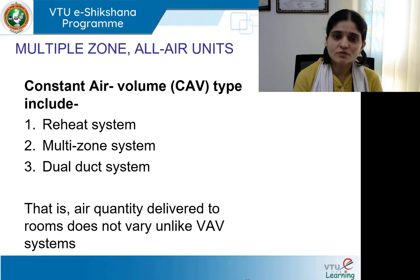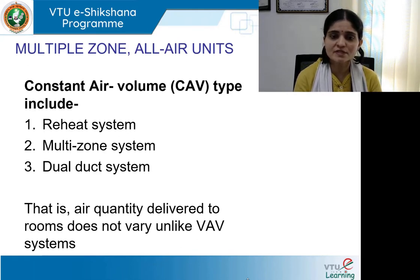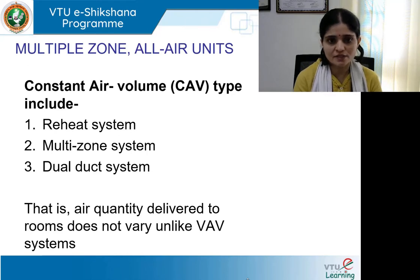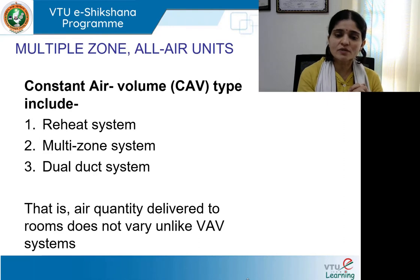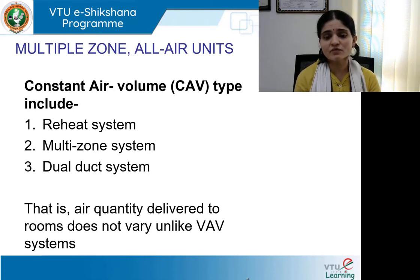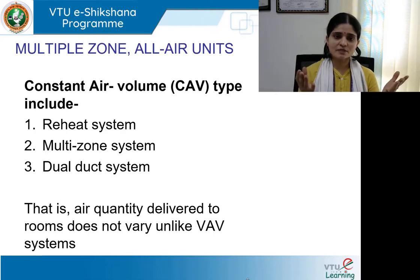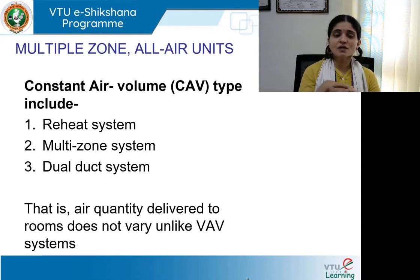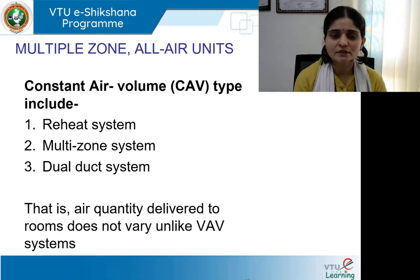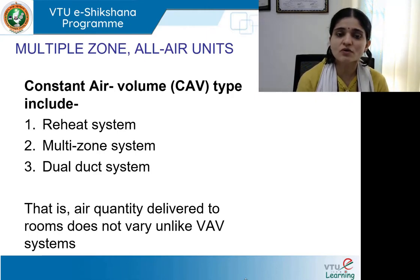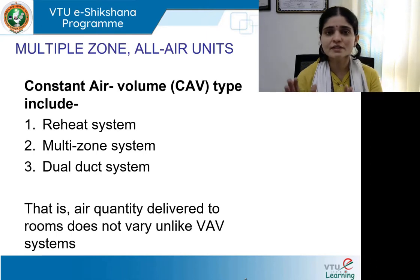Under multiple zone all air units, we have constant air volume type — popularly known as CAV systems — which includes reheat system, multi-zone system, and dual duct system. When the air quantity delivered to rooms or zones does not vary, unlike the variable air volume system, we have two possibilities: constant air volume supply or variable air volume supply. CAV type includes reheat, multi-zone, and dual duct — the air volume is constant when sent to each zone.